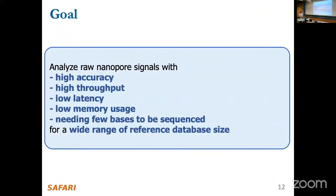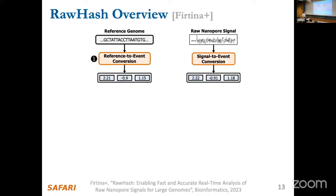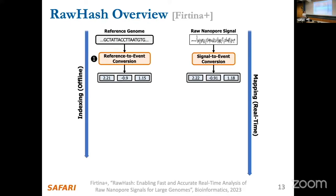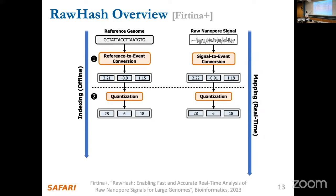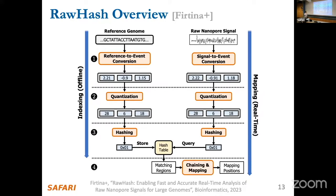Large genomes are inherently difficult, and that's why we propose RawAlign. Our goal is to satisfy all target metrics for a wide range of reference database sizes — particularly large reference genomes, since small ones are already reasonably handled. In RawHash, we generate candidates by converting the reference genome through pre-processing steps to a quantized signal representation, quantize the raw signal the same way, apply hashing, end up with a hash table, and get out candidate locations.